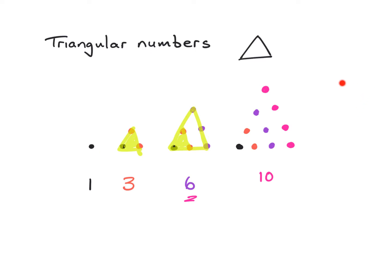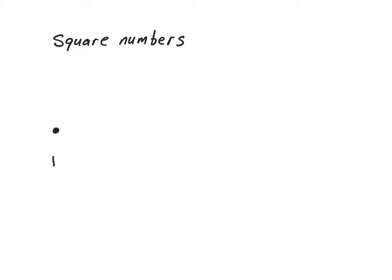See if you can draw the next triangle and tell me how many dots are used. Put the video on pause and come back when you're ready. Your triangle should look something like this — we've actually added another five dots, so ten plus five gives us fifteen.